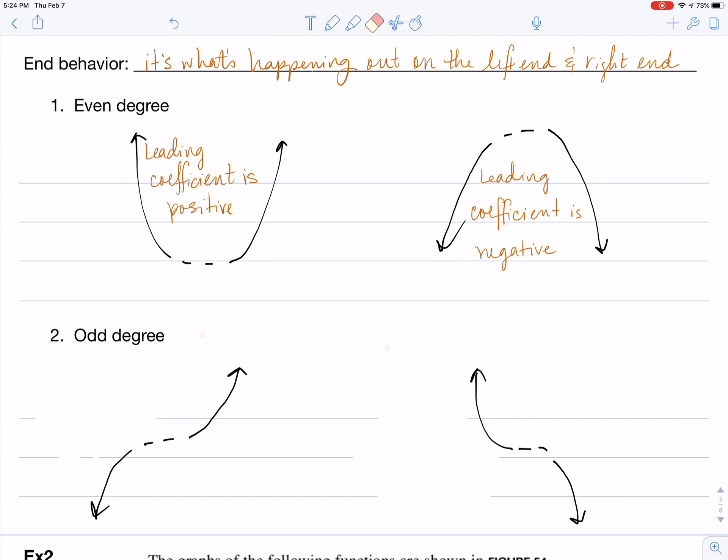If I have an odd degree, notice that the ends, one will be up and one will be down. Now the first example that I have drawn is overall an uphill example. You're starting way down at the bottom and you're ending way up at the top. This is going to be caused by a leading coefficient that's positive. It's overall uphill.